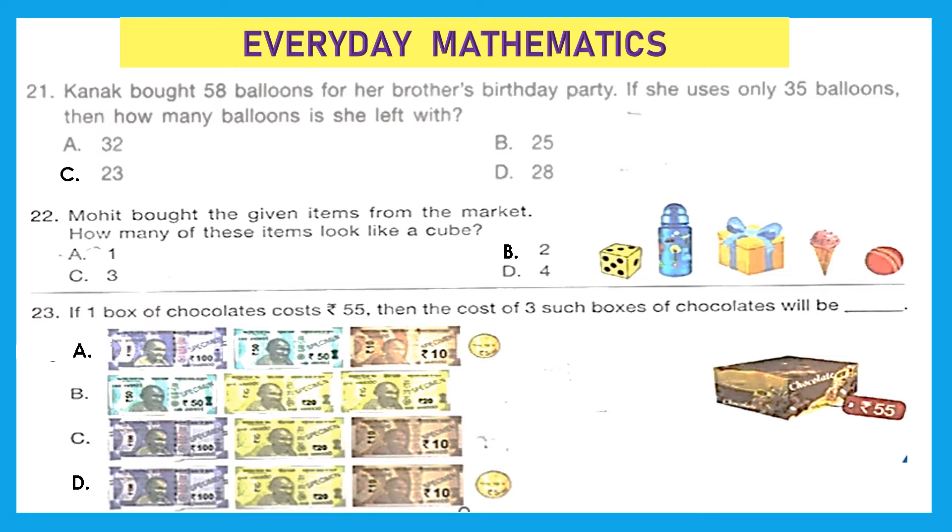Everyday mathematics. Question 21: Komal bought 58 balloons for her brother's birthday party. If she uses only 35 balloons, then how many balloons is she left with? Okay, here we have to find the difference, and whenever we have to find the difference we do subtraction. So we will do the subtraction: 58 minus 35 equals 23 balloons. Option C, 23 is the right answer.